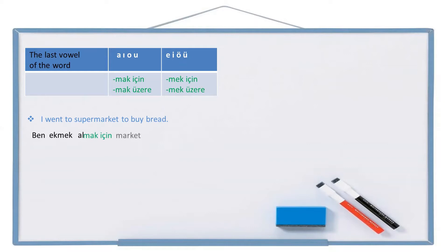Supermarket — market. To supermarket — markete. Go — git. Went — gitti. I went — gittim. So 'I went to supermarket to buy bread' is: ben ekmek almak için markete gittim.